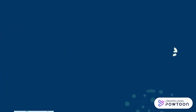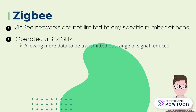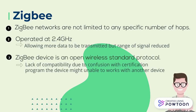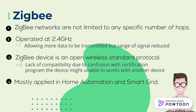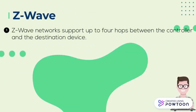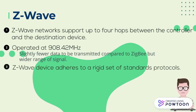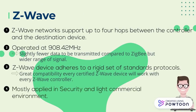What is the difference between them? ZigBee mesh networks are not limited to any specific number of hops, operate at 2.4 GHz, allowing more data to be transmitted, and reduce lack of compatibility because it is an open wireless standard protocol mostly applied in home automation and smart grid. For Z-Wave, it only supports up to 4 hops between controller and destination, operates at 900 MHz, with slightly less data transmitted compared to ZigBee, but it has great compatibility because it adheres to a proprietary standard protocol mostly applied in security and light commercial environments.